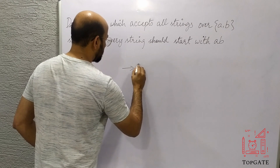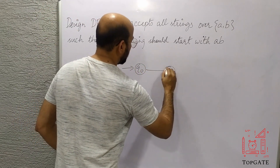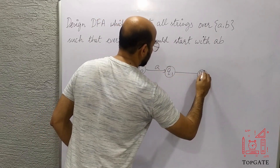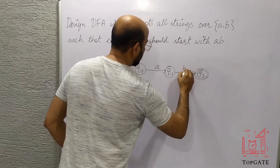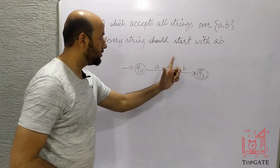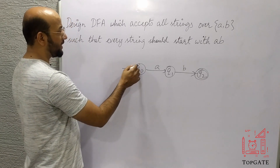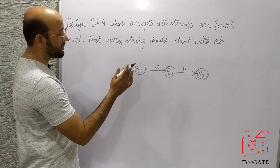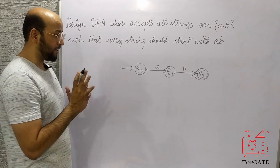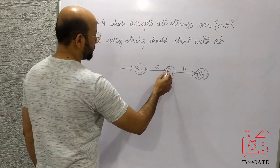Let's design a DFA for the minimum string 'ab'. The initial state is q0; on input 'a' go to q1; on input 'b' from q1 go to q2 and make q2 the final state — so 'ab' is accepted and we start with 'ab'. I cannot add a self-loop at q0 because that would allow strings starting with 'b' to be accepted.